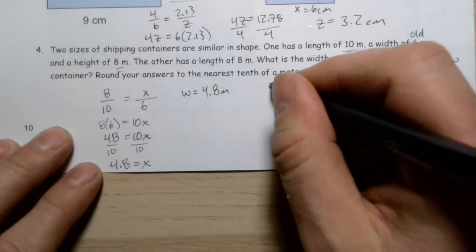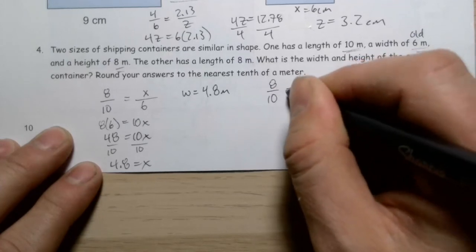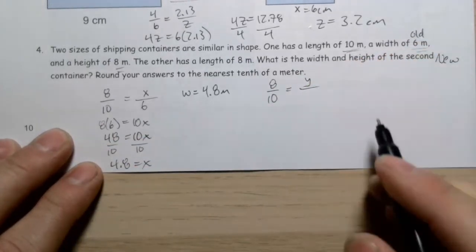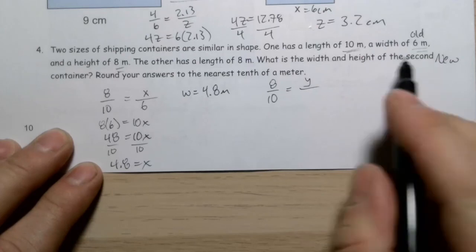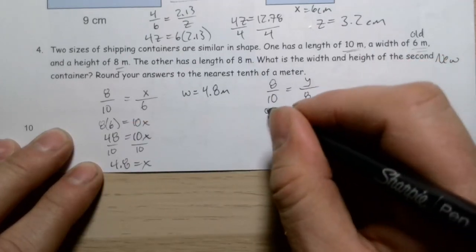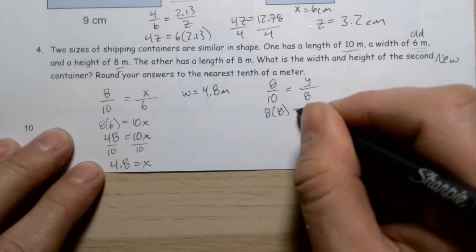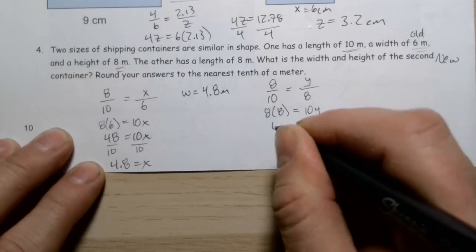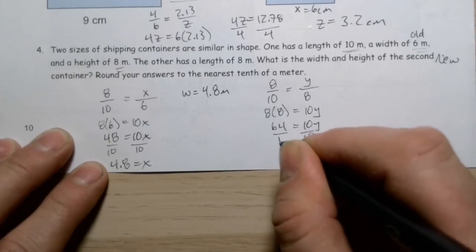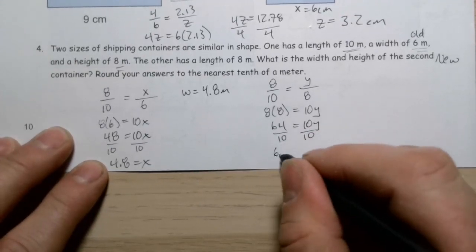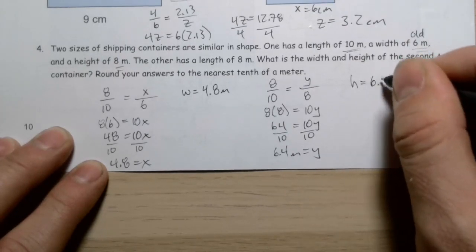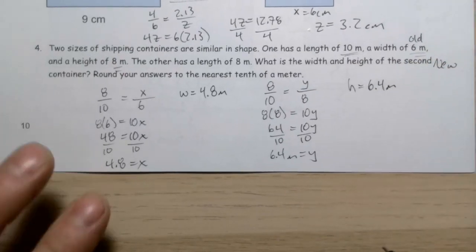Using the same scale factor of 8 over 10 for the height: 8 over 10 equals y over 8. Cross multiplying: 8 times 8 equals 10 times y, so 64 equals 10y. Dividing by 10 gives y equals 6.4 meters. So the new height is 6.4 meters.